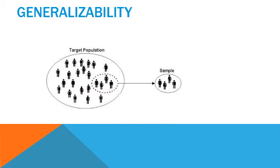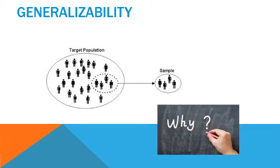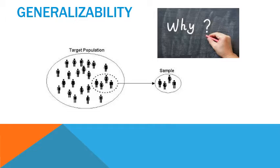Qualitative generalizations are seen as sample-to-population generalizations, more for large-scale studies, whereas qualitative generalizations are seen as case-to-case generalizations, better for understanding unique instances. The main benefit of mixed method studies is that they offer a broad view that can explain trends and correlations while providing understanding of why trends occur and how they operate.